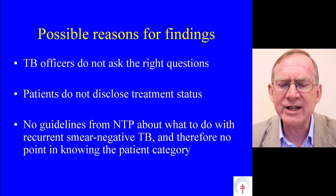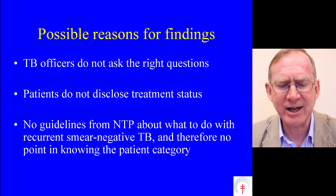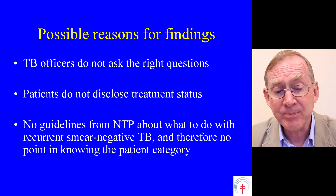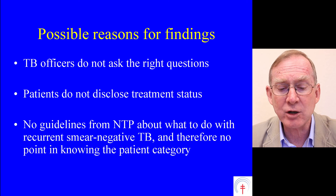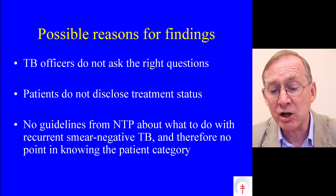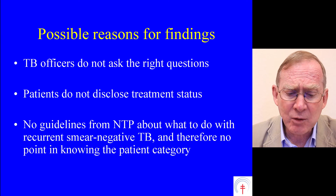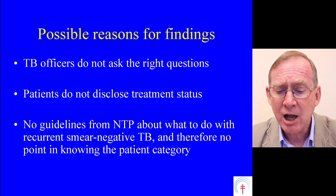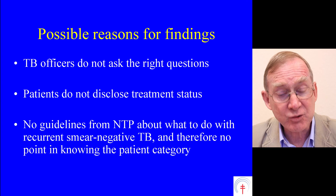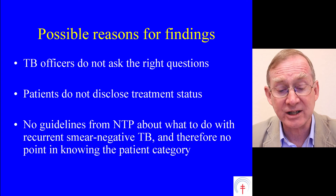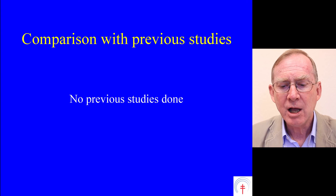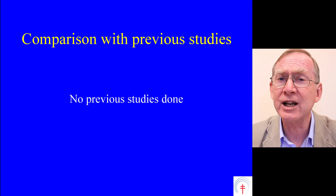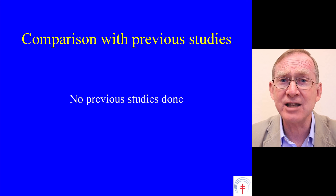We now go on to discuss possible reasons for the findings, and here we have to be speculative. For this paper, we might say the reasons could be that TB officers do not ask the right questions, patients may not disclose their treatment status, and there were no guidelines from the national TB programme about what to do with recurrent smear negative TB — therefore district TB officers may have felt there was no point in knowing about the patient category. For comparison with previous studies, a literature review found no previous studies done examining this aspect of TB control programmes.